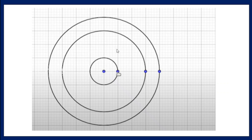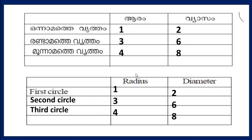The 2nd circle has radius 3 — how do you see this center? Count 1, 2, 3 from the center point, then 1, 2, 3, 4, 5, 6 for the diameter. The 2nd circle radius is 3, diameter is 6.